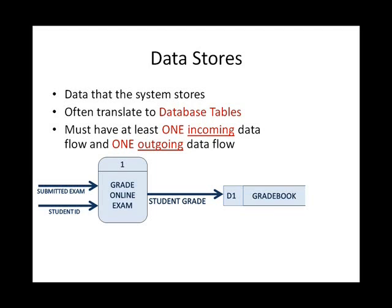In the example in front of you, I have a process called 'grade online exam.' It takes in the submitted exam and the student ID based on their login, and it produces an output called 'student grade.' If I don't save it, it's gone — and maybe that's fine for a mock exam, but otherwise I do need to store it, so it goes into a data store. That's an incoming data flow.